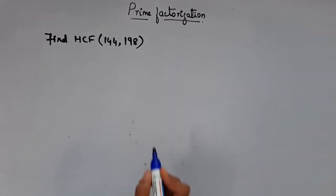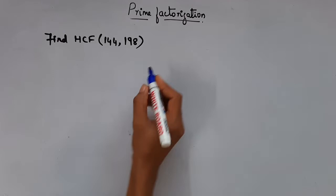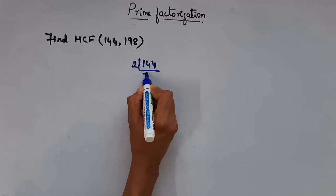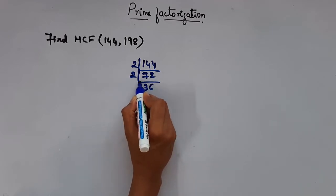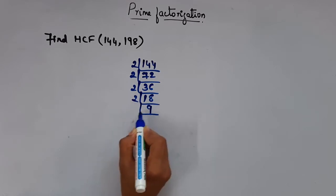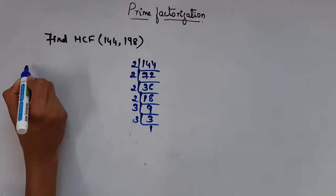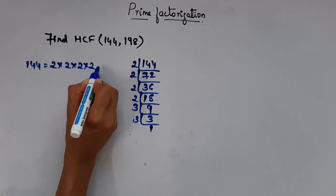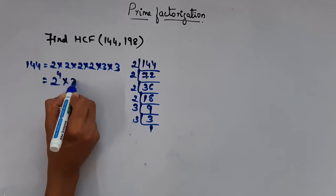Now let's see this problem: find HCF of 144 and 198. So for 144, dividing by the prime number 2 repeatedly and then by 3, we get 144 written as 2 into 2 into 2 into 2 into 3 into 3. In terms of powers, that is 2 power 4 into 3 power 2.